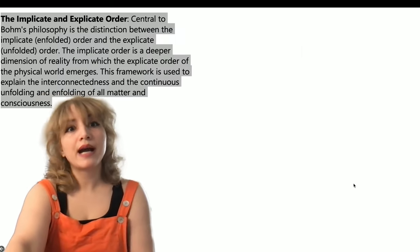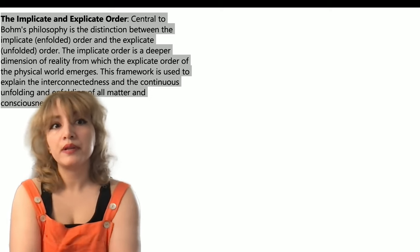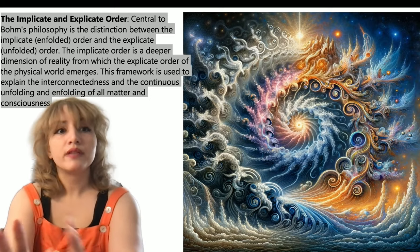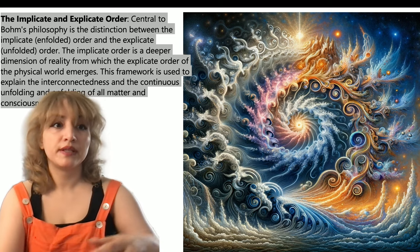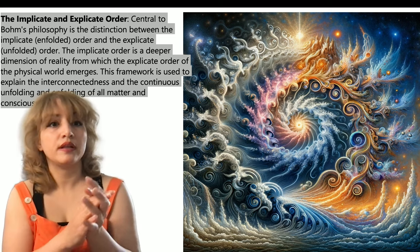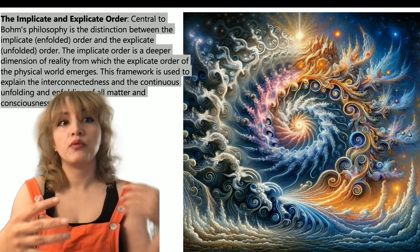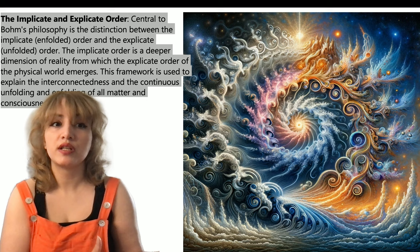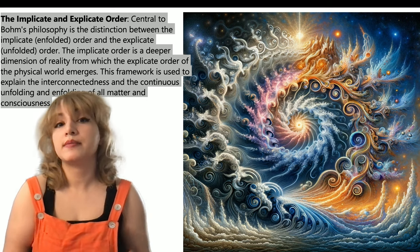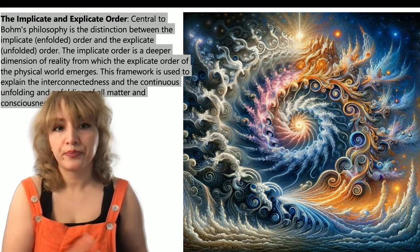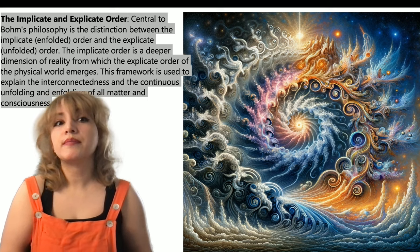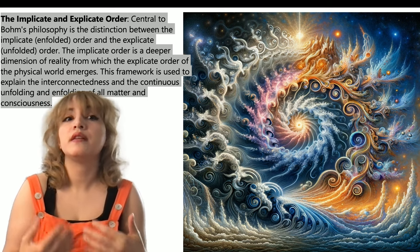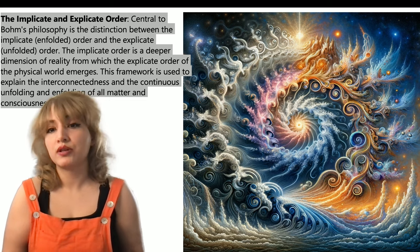Now let's go back to his idea of implicate and explicate order. Central to his philosophy is the distinction between implicate or enfolded and explicate or unfolded order. The implicate order is the deeper dimension of reality from which the explicate order emerges. This framework is used to explain the interconnectedness and the continuous unfolding and enfolding of all matter and consciousness.